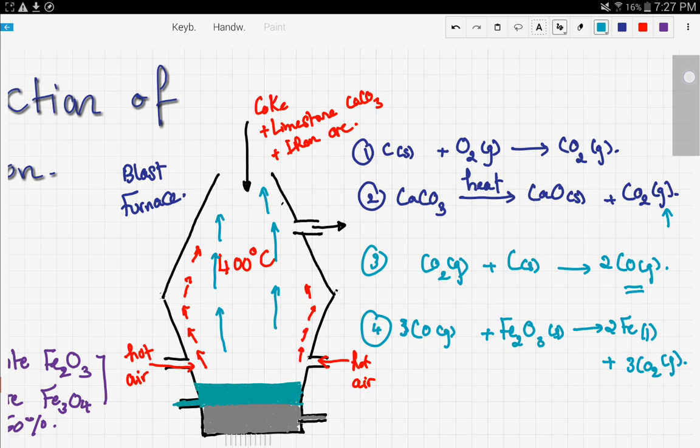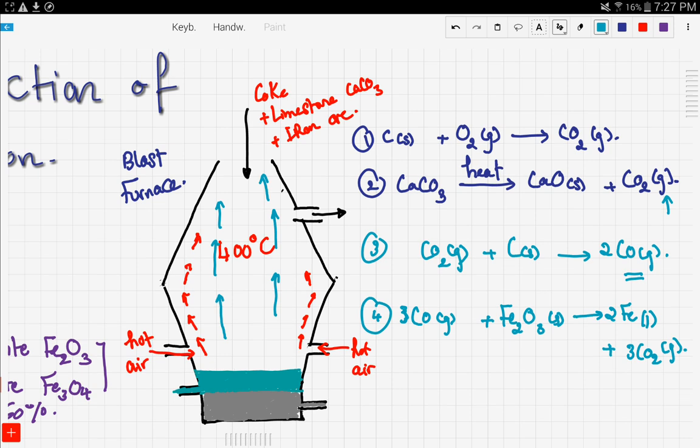Now the last reaction we have to note is that throughout this process there are some impurities generated. Those impurities react with the calcium oxide produced. The impurities, silicon dioxide in solid form, would give a compound that we call slag.